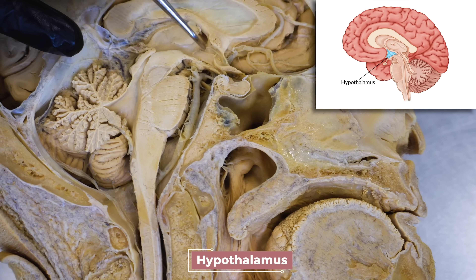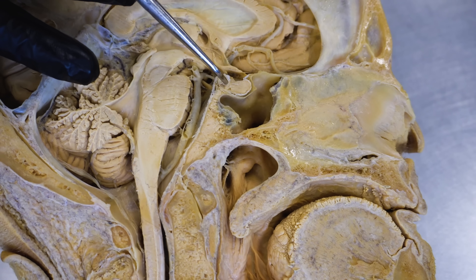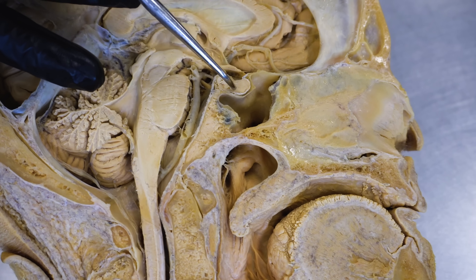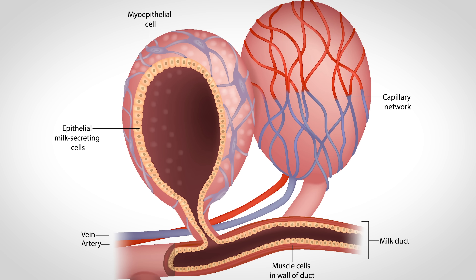The hypothalamus will tell the posterior pituitary gland to release oxytocin and tell the anterior pituitary to release more prolactin. Both of these hormones will then be circulating in the bloodstream, but it takes about 30 to 60 seconds for them to make it to the breast tissues. Prolactin will continue to promote the production of milk within the alveoli, and when oxytocin makes it to the breasts, it will cause the myoepithelial cells — which surround the outer walls of the alveoli — to contract.